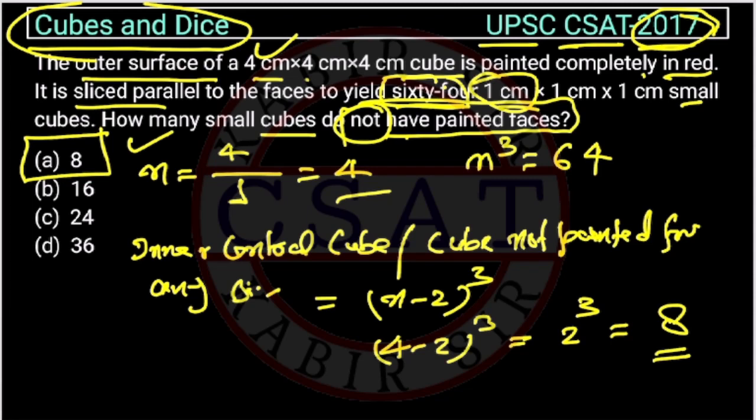If the question will ask painted on 3 sides, there will be 8 cubes. If they will ask you painted on 2 sides, this will be 12 times n minus 2. If they will ask you painted on 1 side, this will be 6 times n minus 2 squared.